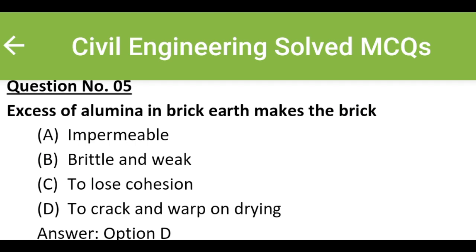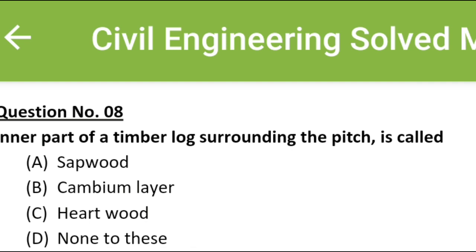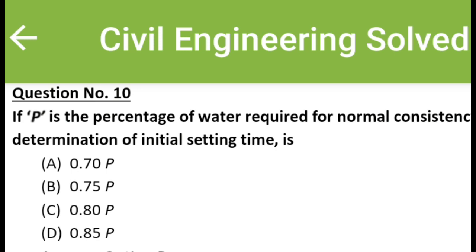The inner part of a timber log surrounding the pith is called: Option A: sapwood, Option B: cambium layer, Option C: hardwood, Option D: none of these. The correct answer is Option C: hardwood. If P is the percentage of water required for normal consistency, the water to be added for determination of initial setting time is: Option A: 0.70P, Option B: 0.75P, Option C: 0.80P, Option D: 0.85P.